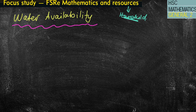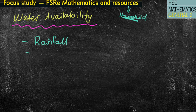Today's lesson is looking at the chapter or exercise on water availability. The two main areas for water availability are questions to do with rainfall and also questions to do with water tanks, but they can also vary.